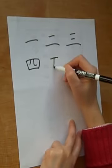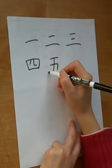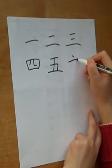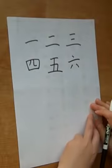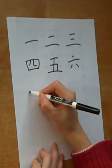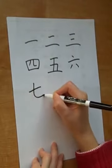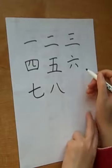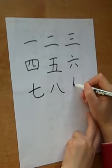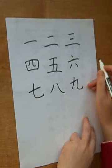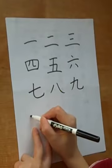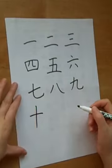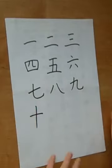6, 7, 8, 9, 10. And the last one, I will show you how to write 0. 0 in Chinese, 10.